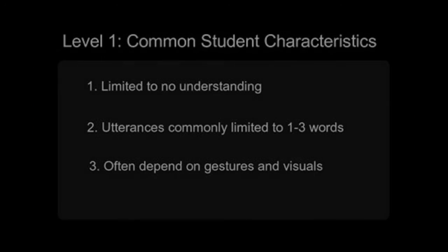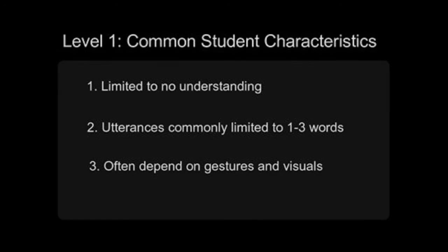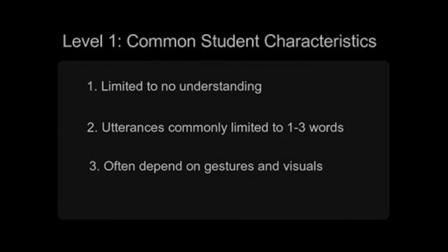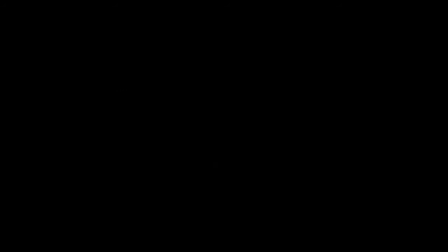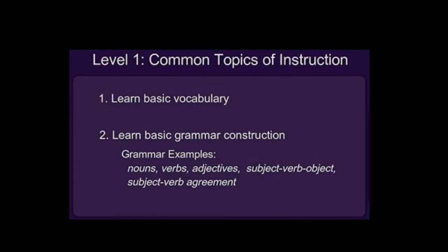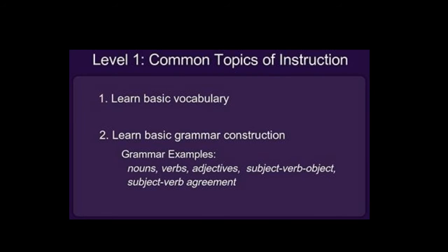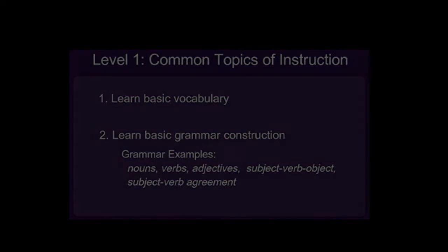At level one, learners have limited or no understanding and limited or no communicative ability. Their utterances are usually limited to one to three words, and they construct meaning through gestures and by interpreting visuals and graphs more than words. At this level you're going to be teaching very basic vocabulary, very basic sentence construction — nouns, verbs, adjectives — and subject-verb-object as well as subject-verb agreement.